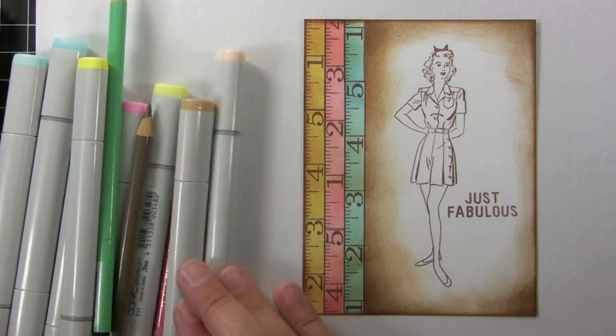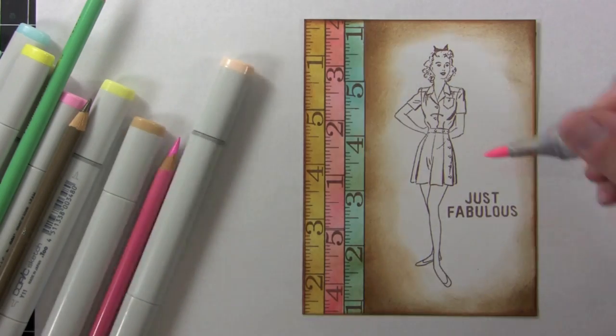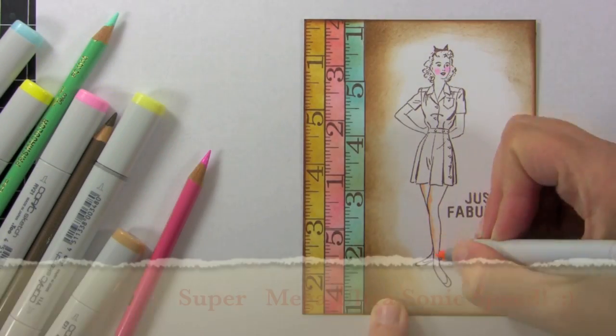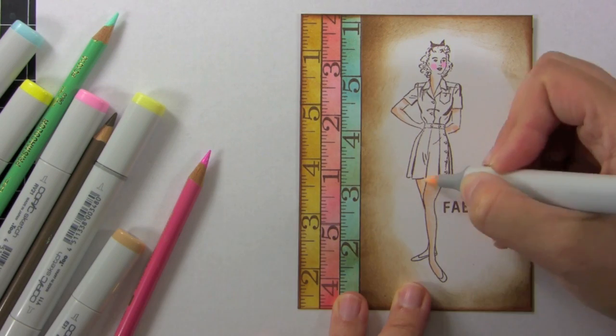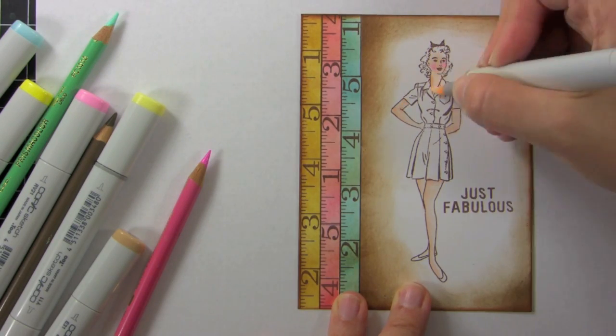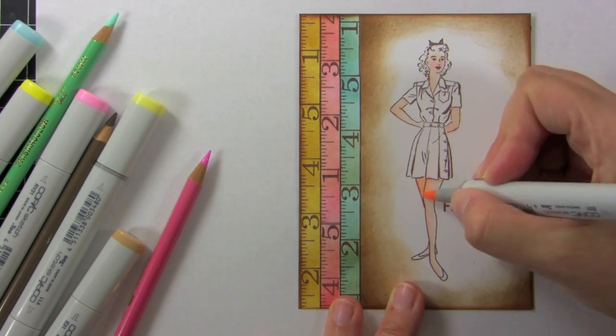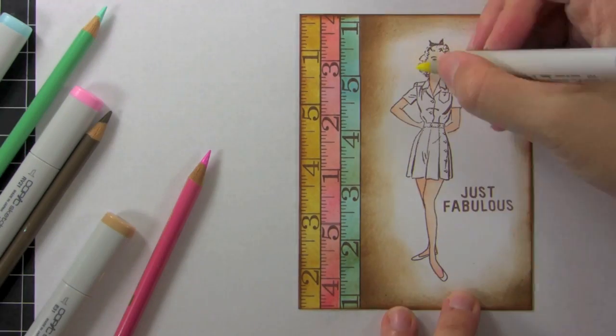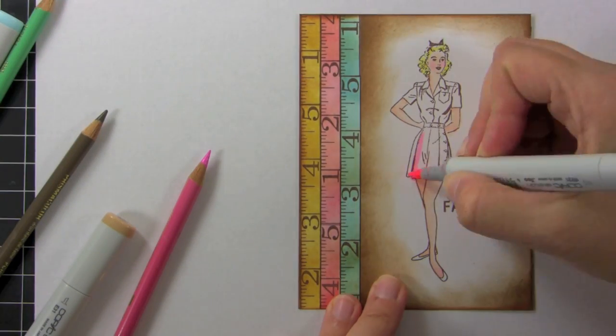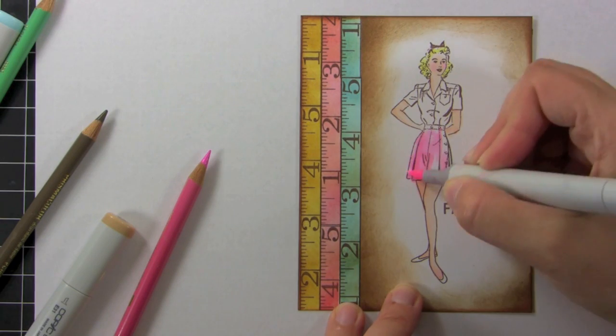So the next step is to go ahead and color everything. I'm using a combination of colored pencils and markers here. And I was running out of time to fit everything into the video. So I thought I would go ahead and include this but put it on fast speed so that you could still see everything but it would fit in the video.